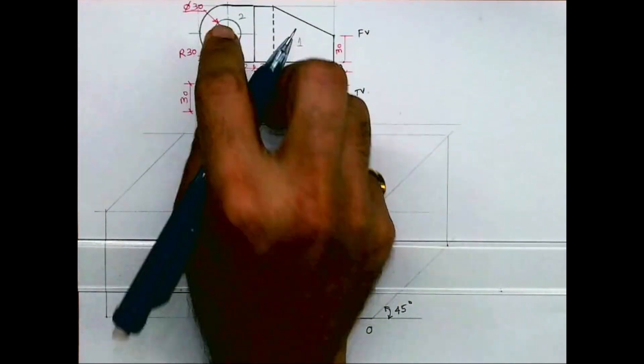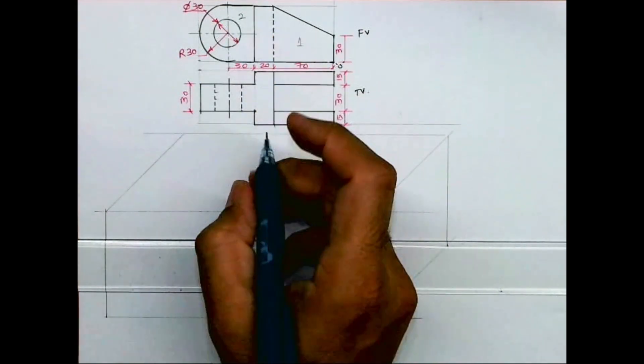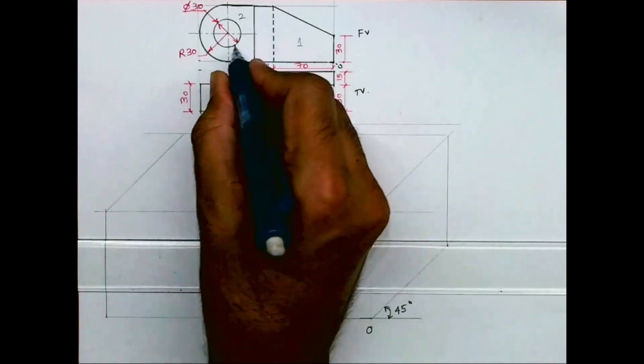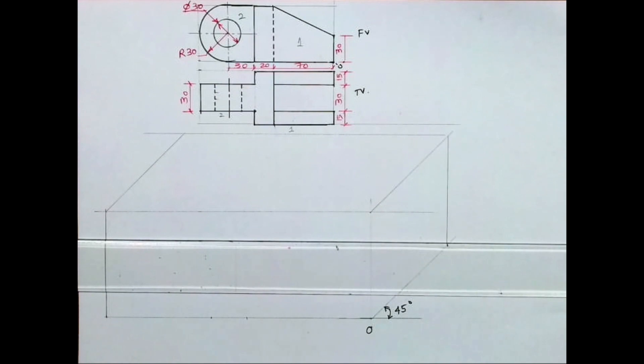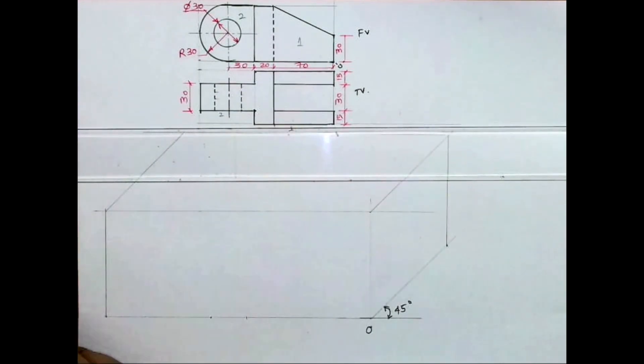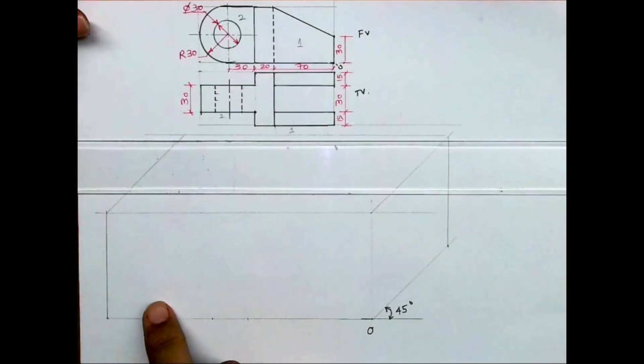In front view you can see two parts. If you see part one, it is nearer to the observer and part two is behind. So we'll start with part one. For that I will take 90, 70 plus 20.